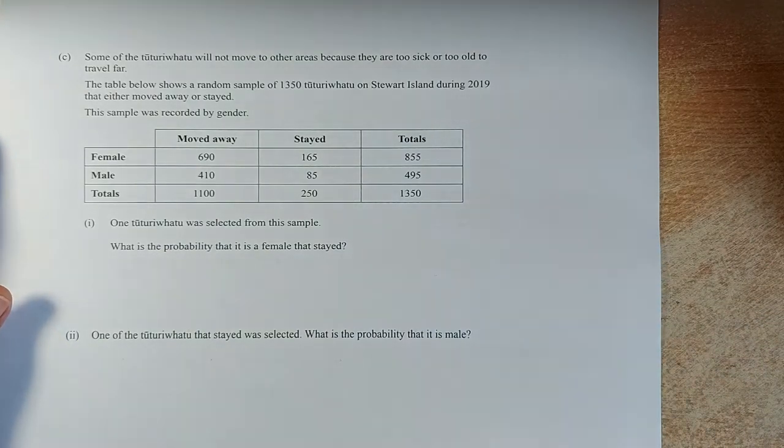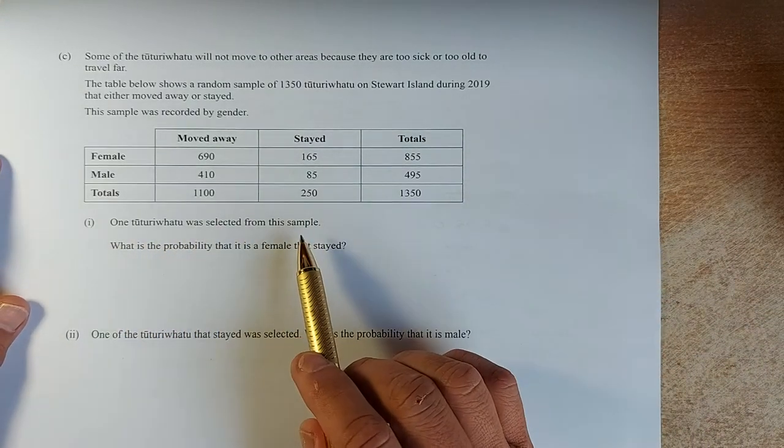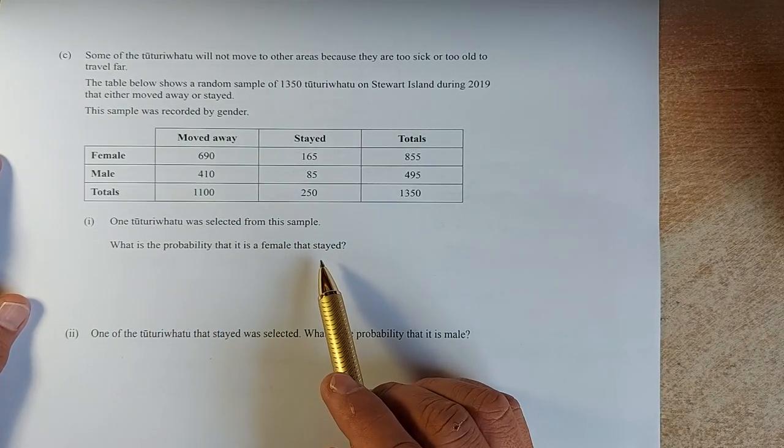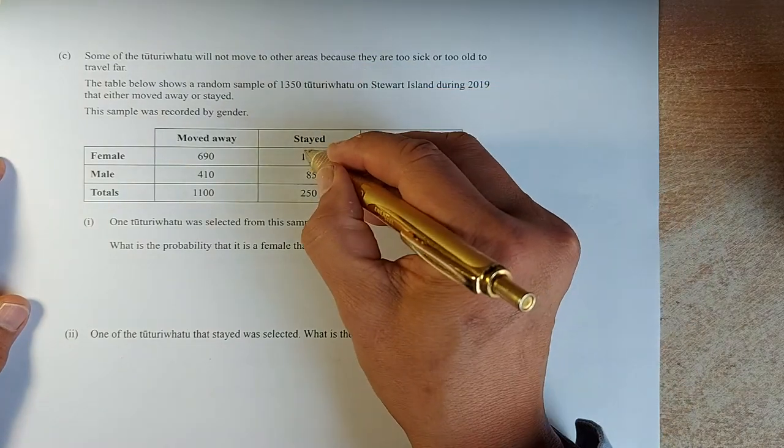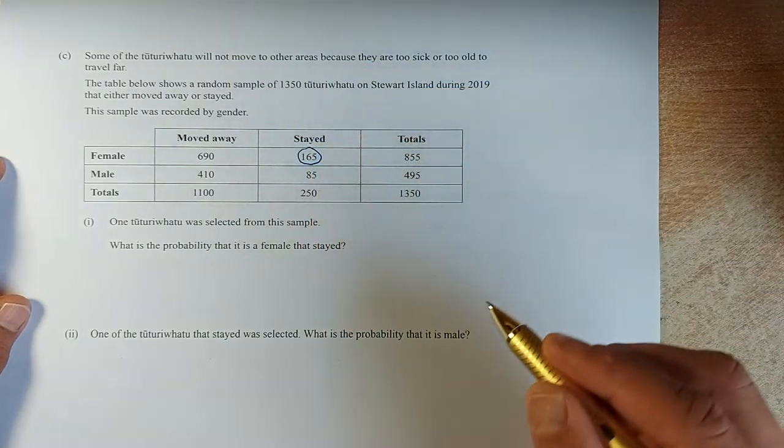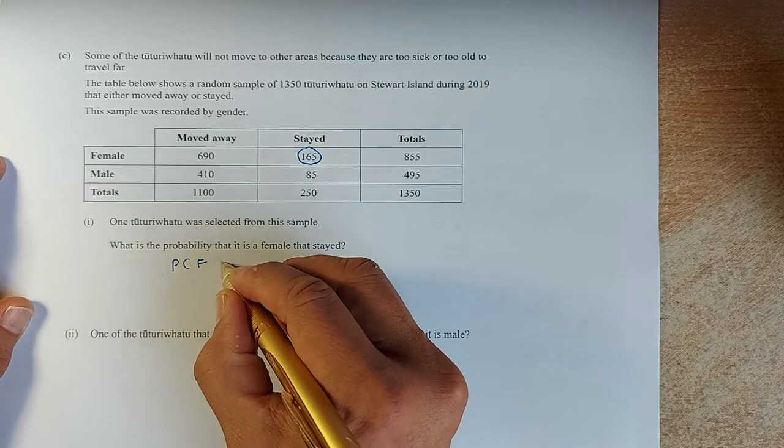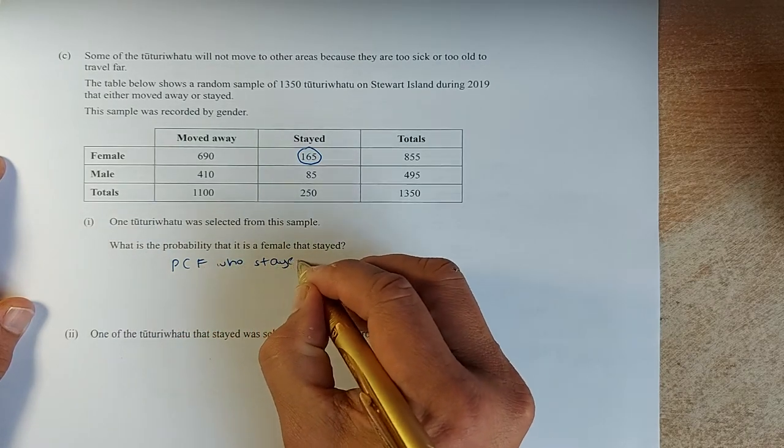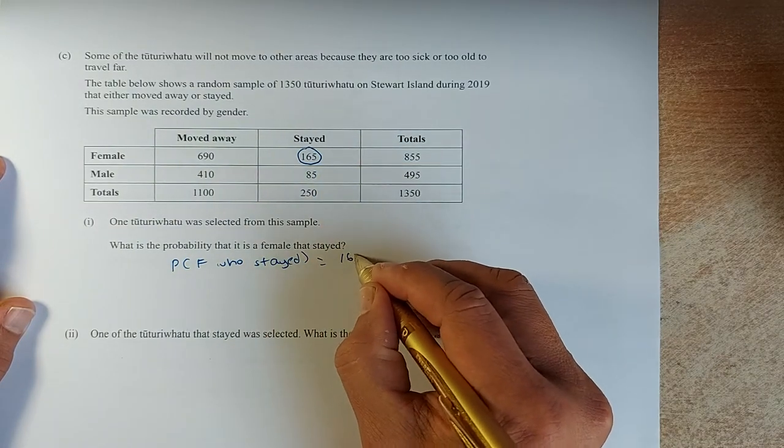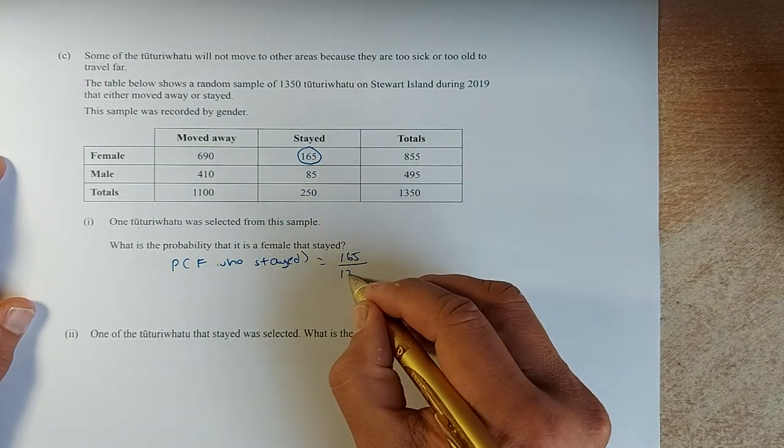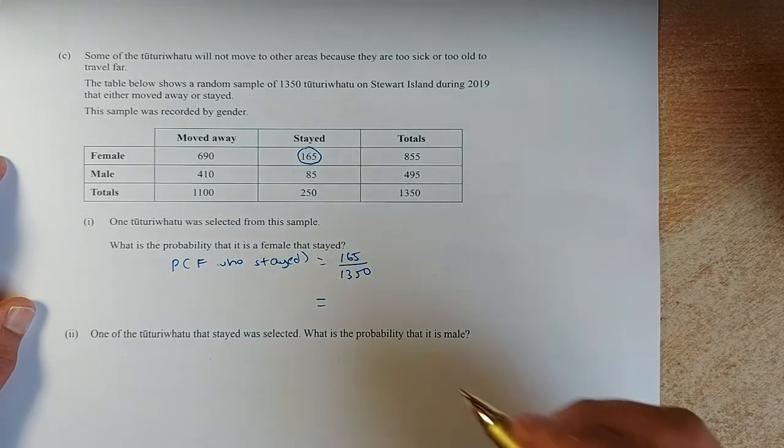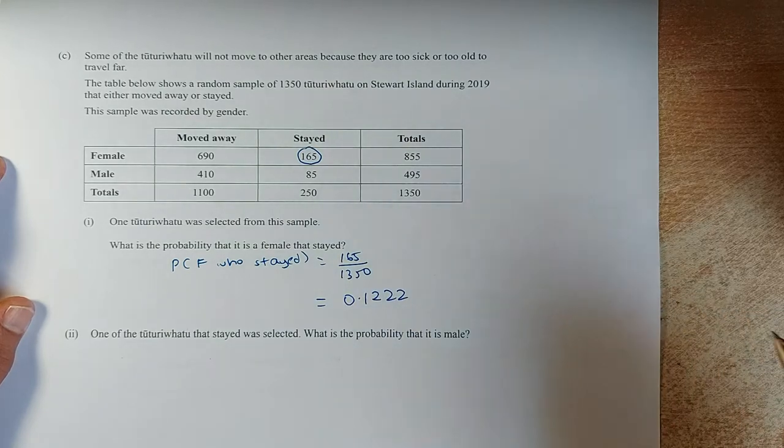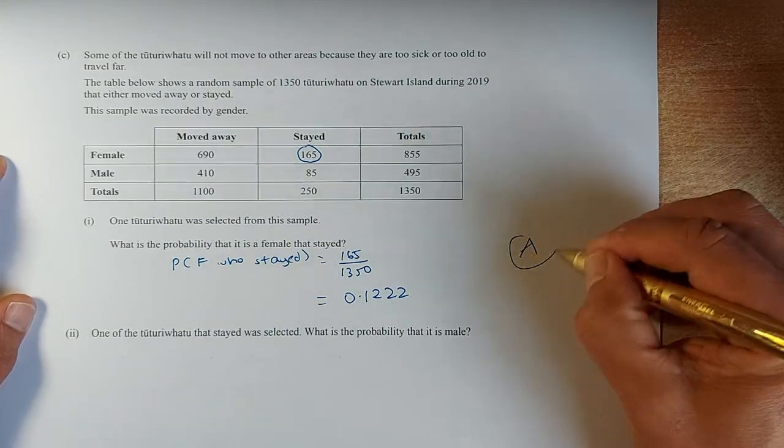We shall answer the question now. One Tuturiwhatu was selected from this sample. What is the probability that is the female who stayed? So we look at the female who stayed, that number is 165. So it's going to be probability of female who stayed, 165 out of the total. The total is 1350. Put in your calculator and the answer is 0.1222. That will give you an achieve in that question.